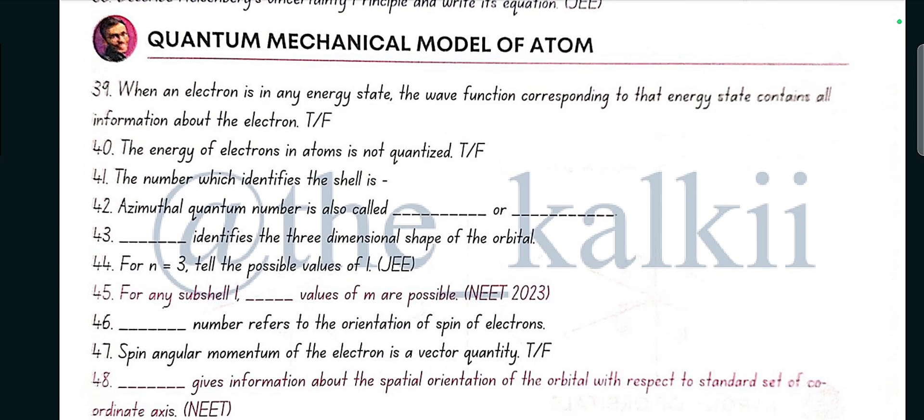Quantum mechanical model of atom. When an electron is in any energy state, the wave function corresponding to that energy state contains all information about the electron, yes true. The energy of electrons in atoms is not quantized? No, false. The number which identifies the shell is principal quantum number. Azimuthal quantum number is also called orbital angular momentum or subsidiary quantum number. Azimuthal quantum number defines the three-dimensional shape of the orbital.